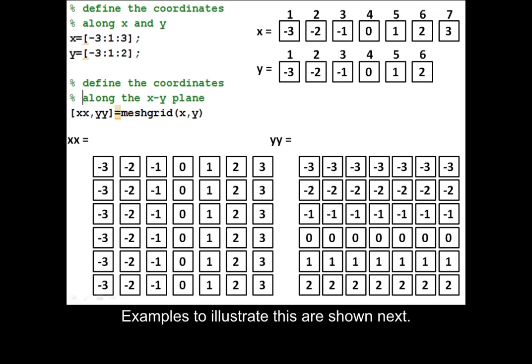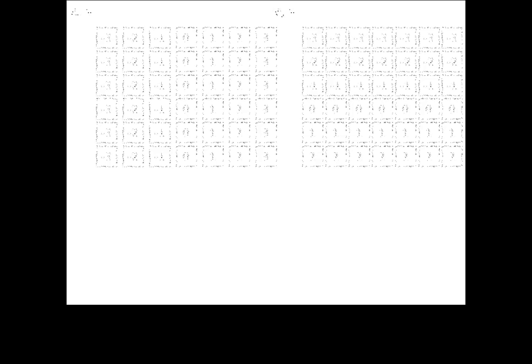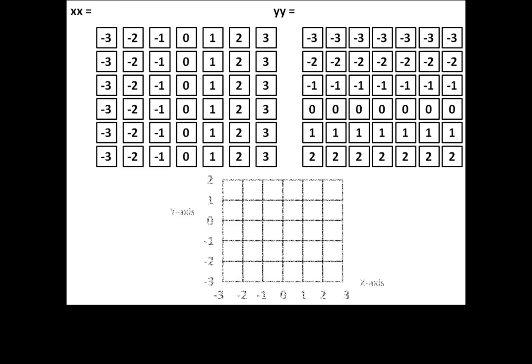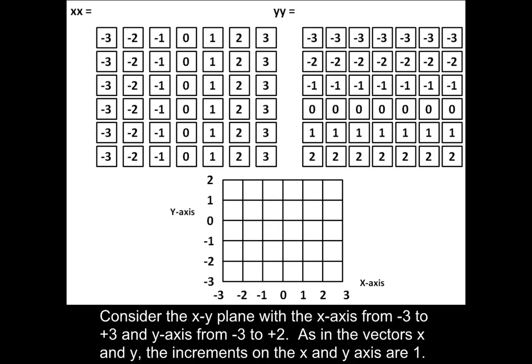Examples to illustrate this are shown next. Consider the X-Y plane with the X-axis from minus 3 to plus 3 and Y-axis from minus 3 to plus 2, as in the vectors X and Y. The increments on the X and Y-axis are 1.